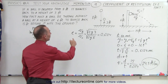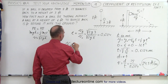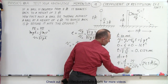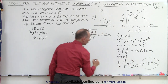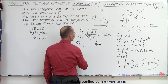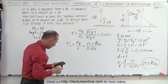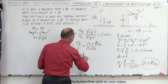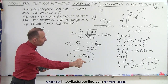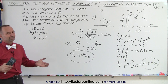Now that we have the coefficient of restitution, we apply the same equation to the wall scenario. Solving for v initial gives v initial equals v final divided by the coefficient of restitution. V final is 24.5 feet per second, and dividing by 0.6124 gives us v initial equals 40 feet per second. That's the speed needed to throw the ball so it bounces back 24.5 feet per second and travels 15 feet before reaching the ground. That is how the coefficient of restitution is used to solve this problem.